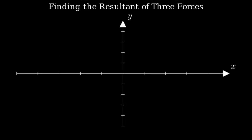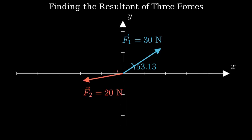Let's start by drawing our coordinate system and the three forces. Here's our x and y-axis. Force f1 is 30 newtons at an angle of 53.13 degrees from the x-axis. f2 is 20 newtons at 200 degrees from the positive x-axis, and f3 is 50 newtons along the positive x-axis.